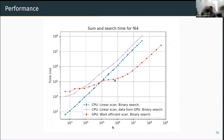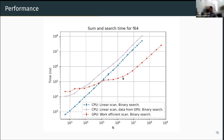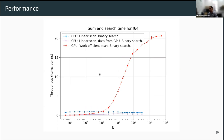With all that implemented, we see a significant improvement over the CPU algorithm for large arrays. Looking at throughput — n divided by time, giving billions of items per second — we're getting around a 20-something times speedup over the CPU algorithm, which is already quite nice.